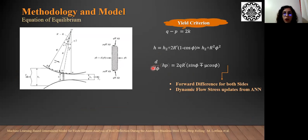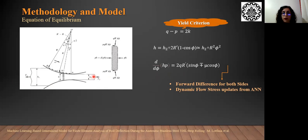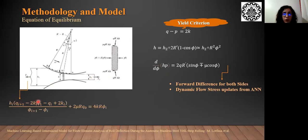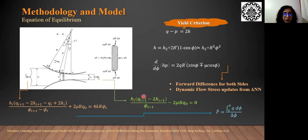Here we can see the general form of the equilibrium equation, which we solve for both sides. We consider the forward difference approach, and also the dynamic flow stress of the strip is updated from our proposed ANN at each step. Here you can see the forward difference formulation of the equilibrium equation for the entry side. Finally, we calculate the mean pressure of the entry side to obtain the distributed load which the strip applies to the roll during the rolling process.